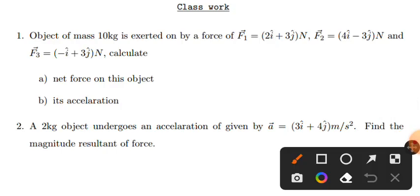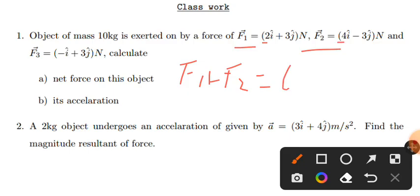F1 is equal to 2i + 3j and F2 is equal to 4i - 3j. F1 + F2: the i components give 2 + 4 = 6i, and the j components give 3j - 3j = 0j.